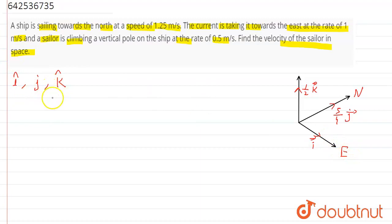We have already taken the i, j, k unit vectors for the vertical and directional components. The velocity of the current, ship, and sailor respectively add. So we can write the velocity vector equals i vector plus 5/4 j vector plus 1/2 k vector.